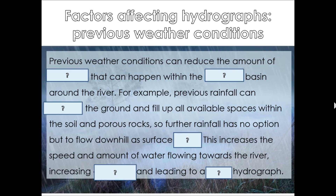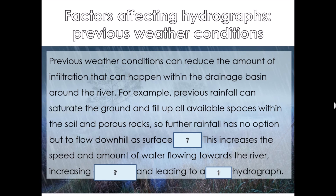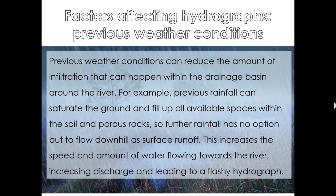Previous weather conditions can reduce the amount of infiltration that can happen within the drainage basin around the river. For example, previous rainfall can saturate the ground and fill up all available spaces within the soil and porous rocks. So further rainfall has no option but to flow downhill as surface runoff. This increases the speed and amount of water flowing through towards the river, increasing discharge and leading to a flashy hydrograph. We've got lots of key terms there, and we've also spoken about how that increases both the speed and the amount of water flowing into the river.